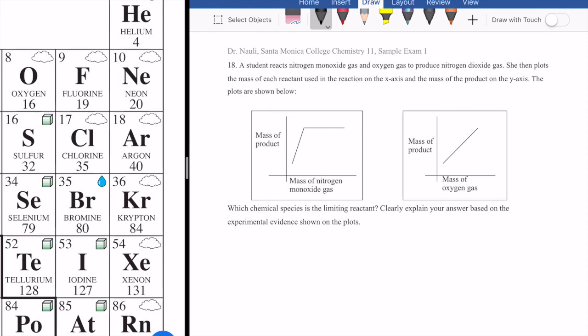In this case, we're given two plots. The student reacts nitrogen monoxide gas and oxygen gas to produce nitrogen dioxide gas. Then what she did is plot the mass of the reactant used in the reaction and the mass of the product on the y-axis. On the left side, the mass of the nitrogen monoxide product is on the y-axis. Same thing on the right side, except that the x-axis here corresponds to the mass of the oxygen gas.